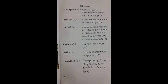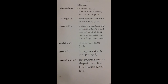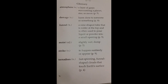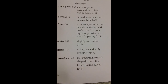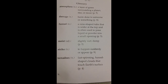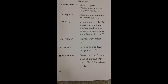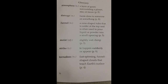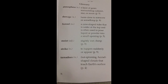Glossary: Atmosphere — a layer of gases surrounding a planet, star, or moon. Damage — harm done to someone or something. Funnel — a cone-shaped tube wider at the top, used to pour liquid or powder into a small opening. Moist — slightly wet, damp. Strike — to happen suddenly or appear. Tornadoes — fast spinning, funnel-shaped clouds that touch Earth's surface.